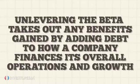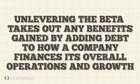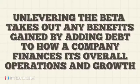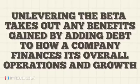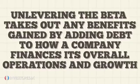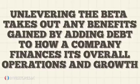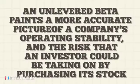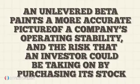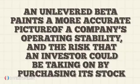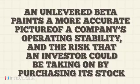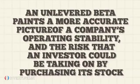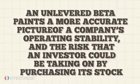Unlevering the beta takes out any benefits gained by adding debt to how a company finances its overall operations and growth. In other words, an unlevered beta paints a more accurate picture of a company's operating stability and the risk that an investor could be taking on by purchasing its stock.